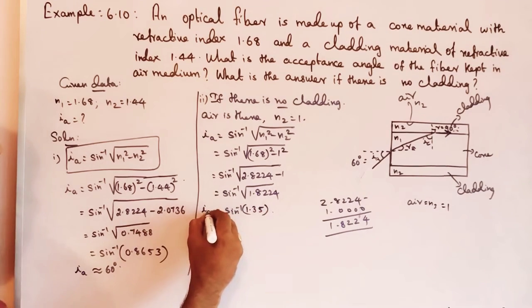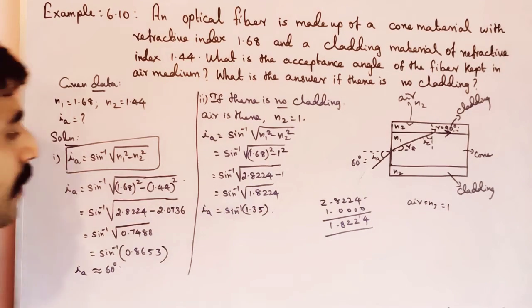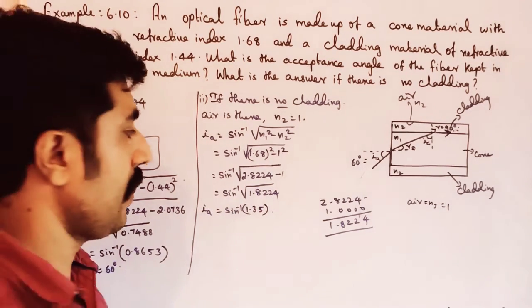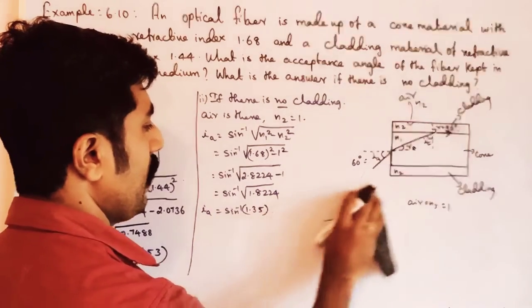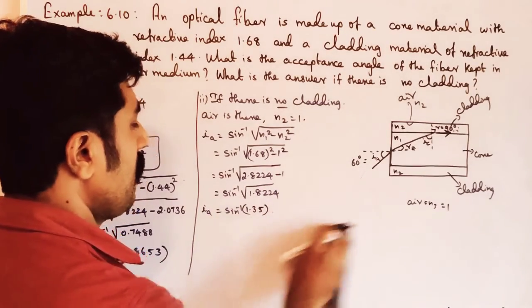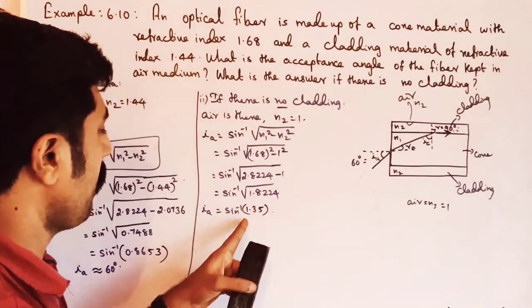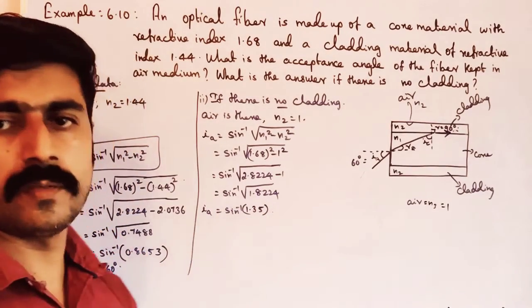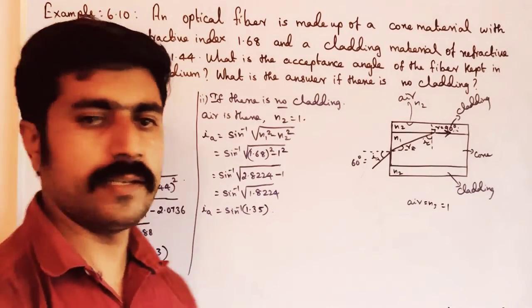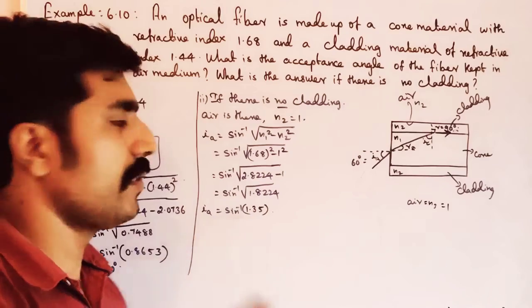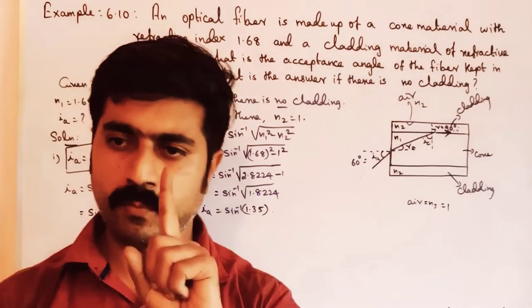In the sine function, the maximum possible value is 1.